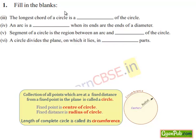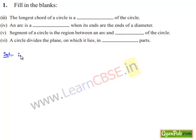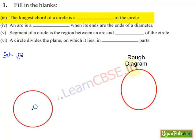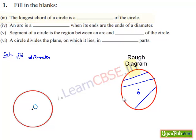Moving on to the third bit: the longest chord of the circle is a dash of the circle. Considering a circle with center O, we know that the longest chord is the diameter. If we draw a chord between any two points, the distance between two points on the circle other than the line passing through the center will have a length less than the diameter. Therefore, the diameter is the longest chord of the circle.